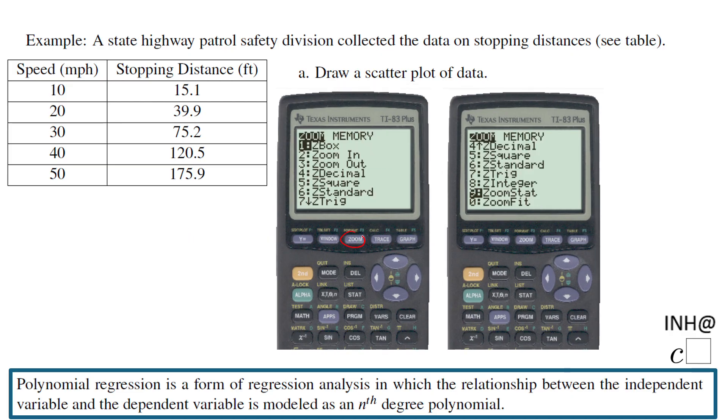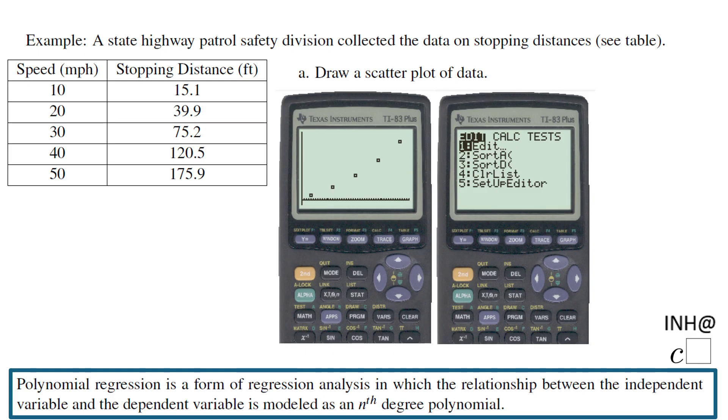If you notice, there is a ZoomStat right here. It's not on the first page, you have to scroll down or press the button with number nine. This ZoomStat will give you the window that fit your data, and now you see the data right here. This is the data we have in the table.